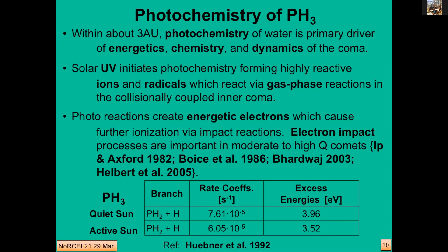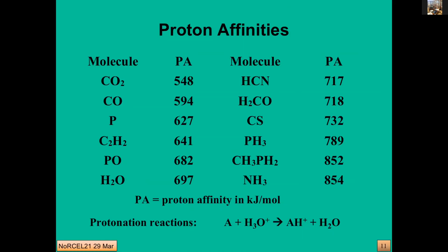Looking in the literature, our colleague Walter Huebner has compiled photo-dissociation cross sections and rates for PH₃, and we put that information into our model. Another important reaction is protonization in this inner coma region. Since water is the most abundant molecule and its ions the most abundant, molecules with higher proton affinities — particularly ammonia and phosphine — are very willing proton acceptors. Collisions with any of the water-related ions, H₂O⁺, H₃O⁺, or OH⁺, transfer the proton over and make PH₄⁺. Methylphosphine will also accept a proton due to its high proton affinity.